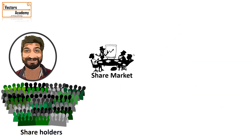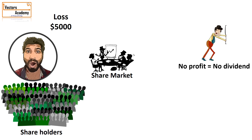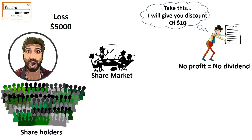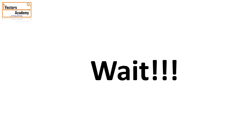In the same way, if the company incurs a loss, it won't be able to pay dividend to shareholders. So shareholders try to get rid of their shares and are willing to sell even for ten dollars less than the face value. The market value comes down to forty dollars. Since the market value is less than the face value by ten dollars, we say the share has been discounted by ten dollars.